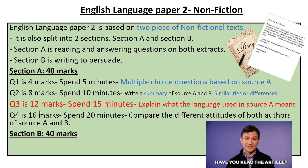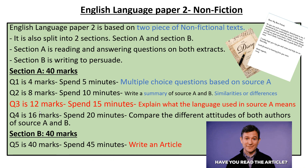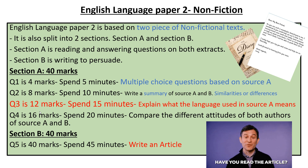Section B — for 2020 only — you're asked to write an article. This is a 40-mark question, just like in Language Paper 1 where Question 5 is a creative writing piece. Here, you're asked to write to persuade by writing an article, and you should spend about 45 minutes on this.